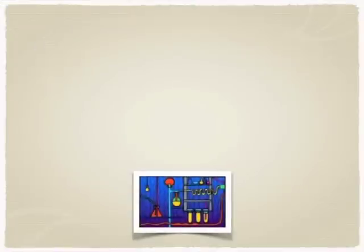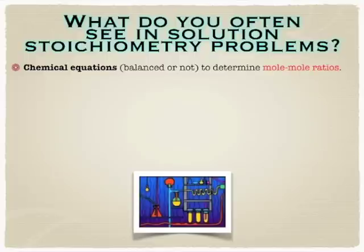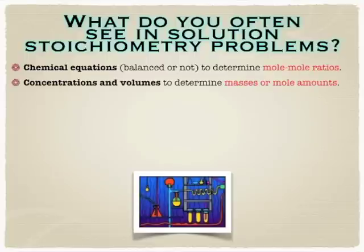What are some things that you might encounter in a solution stoichiometry problem? Well, obviously we'll need a chemical equation. Maybe they'll give it to you balanced, maybe they won't. You're going to have concentrations and volumes. This is the key difference.